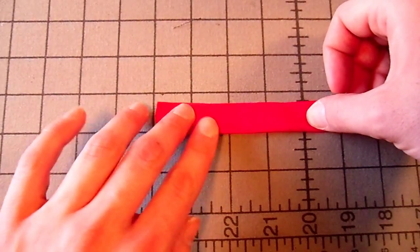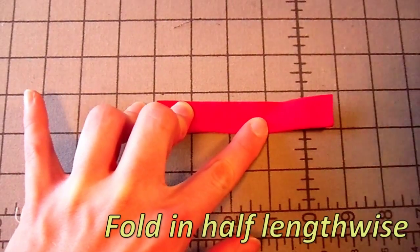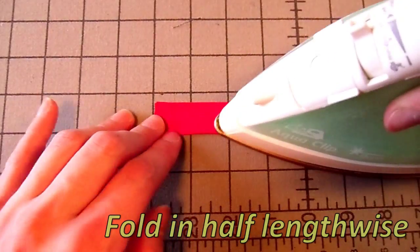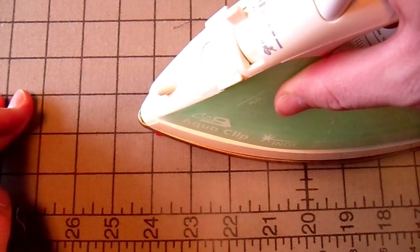Cut out a 1 1/2 inch bias strip that is 5 inches long. You can use some of your store-bought quilt binding for this. Just press out all the folds.